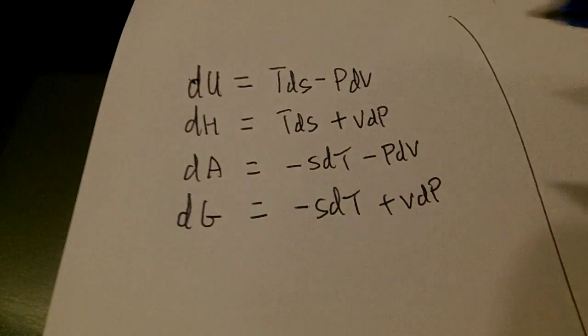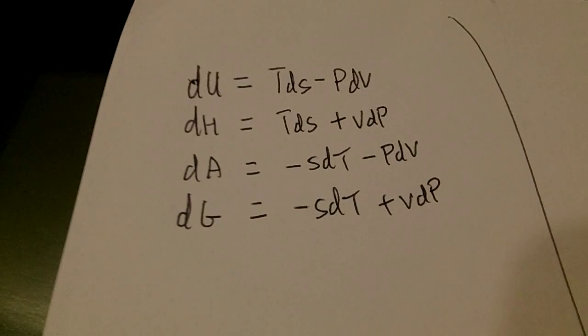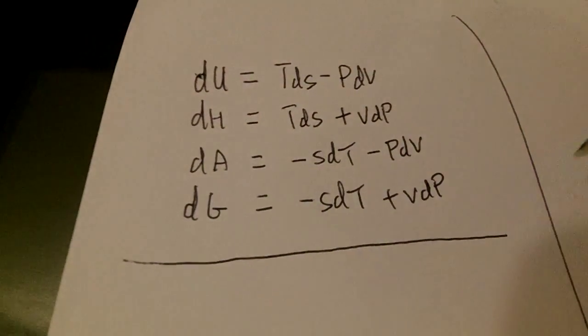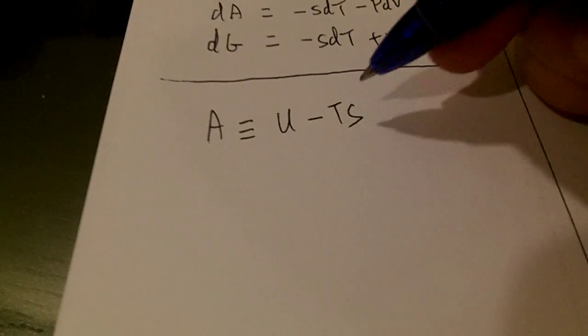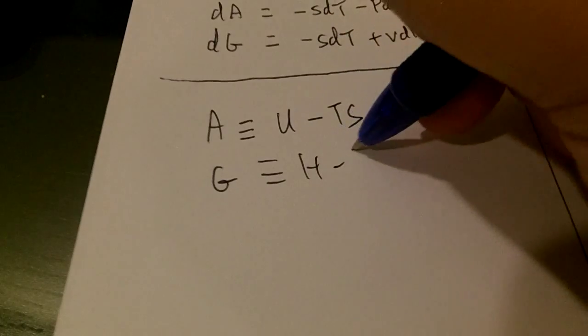I don't really have to memorize all these equations except maybe the first two. You can actually derive the last two from the definitions of Helmholtz and Gibbs free energy, which are as follows: A equals U minus TS, G equals H minus TS. Now let's just move on.